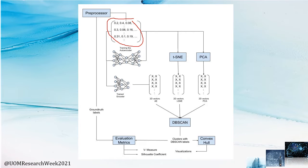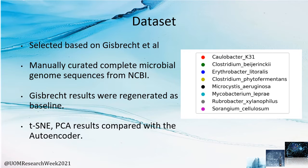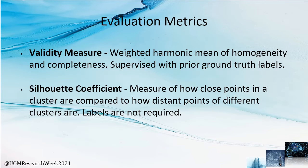To make visualizations clear, we use convex hull to draw boundaries. The dataset was based on Gichbrecht's paper and whole genome sequences were obtained from NCBI. We use two evaluation metrics: V-measure, an extrinsic measure that considers ground truth labels, and the silhouette coefficient, which does not require ground truth labels but measures cluster quality.